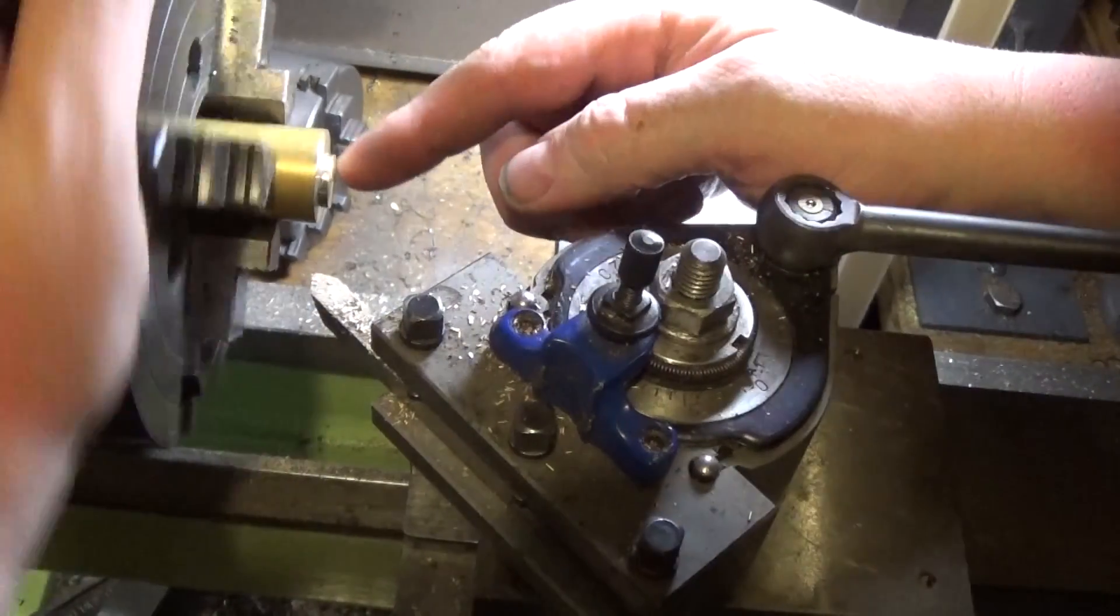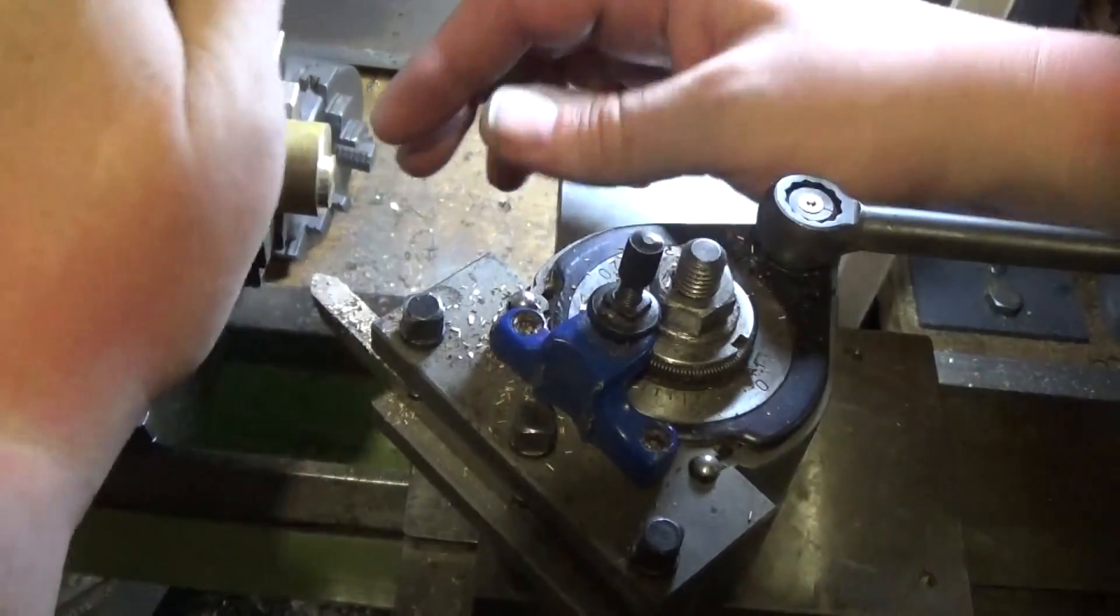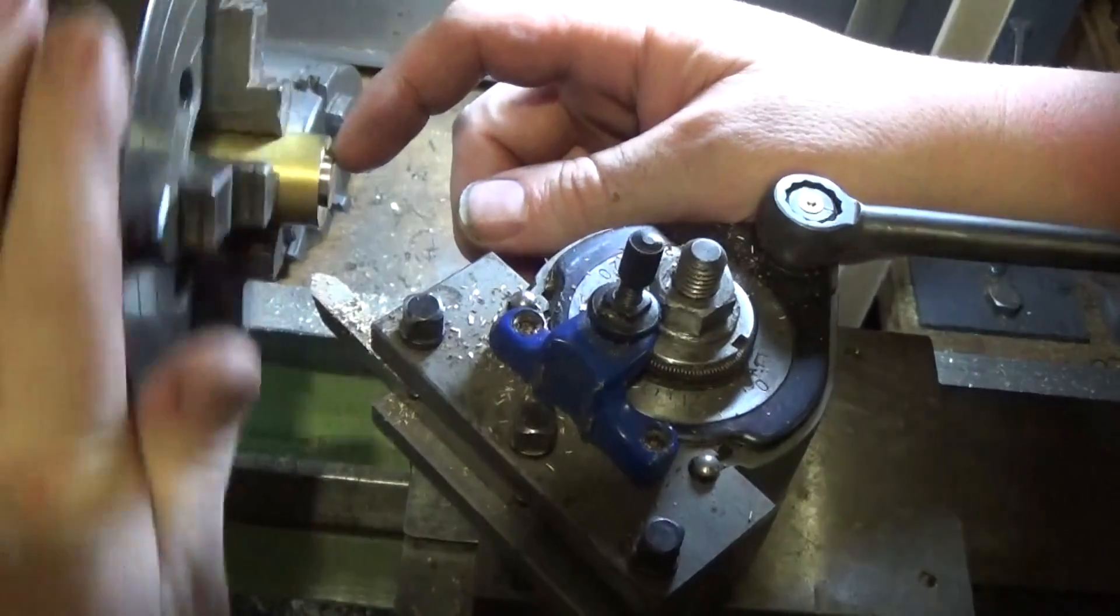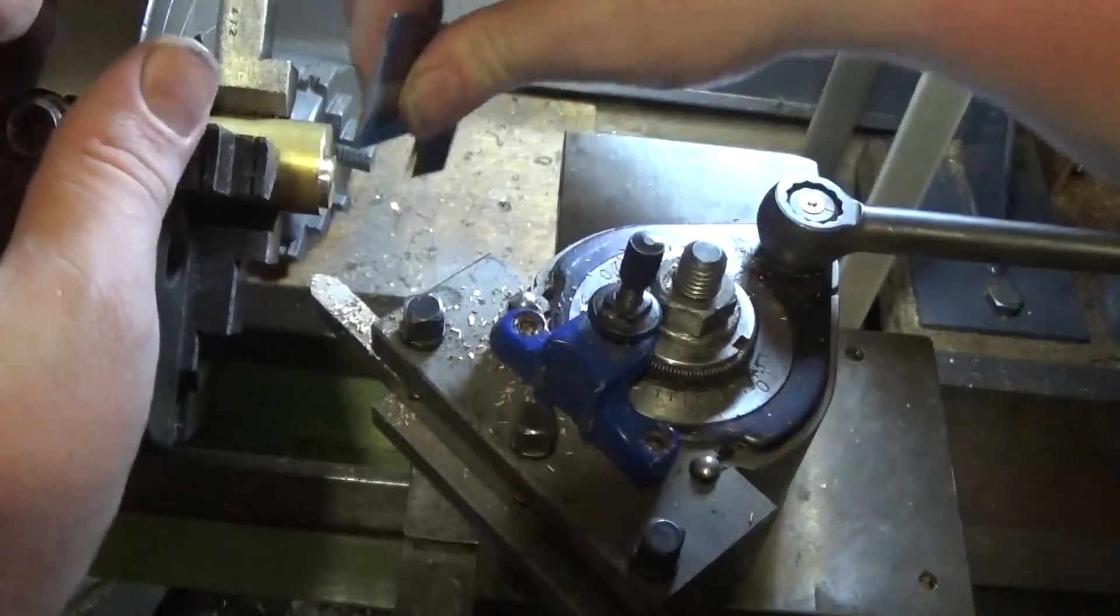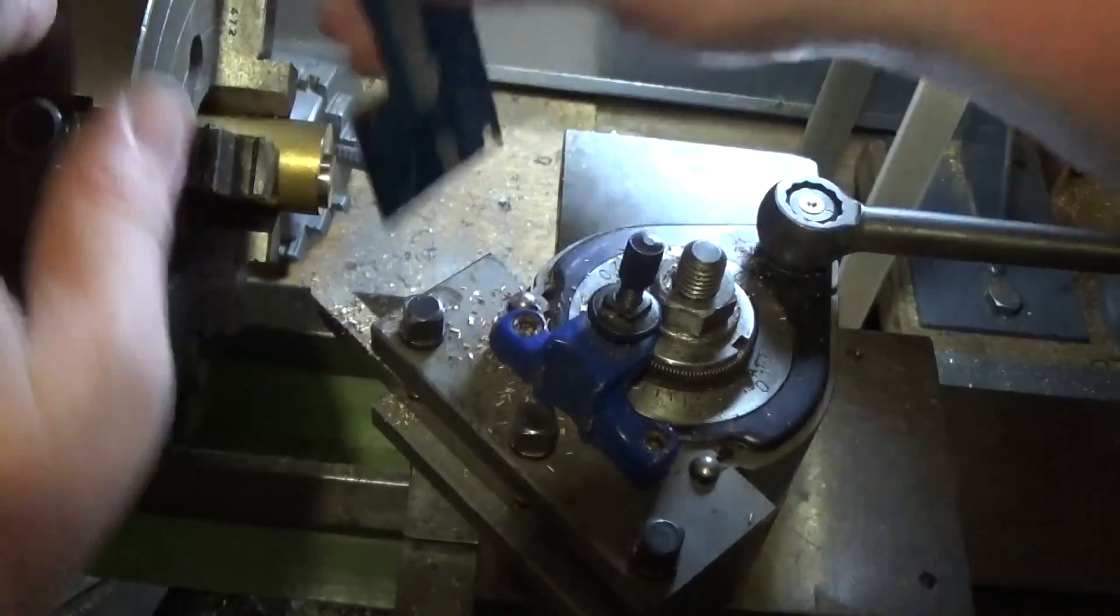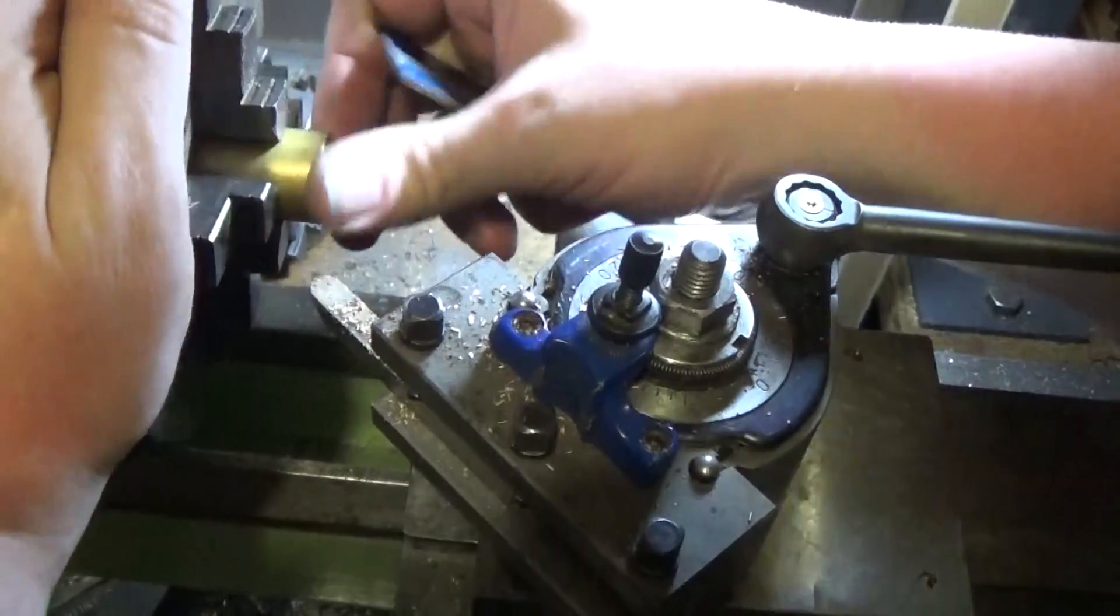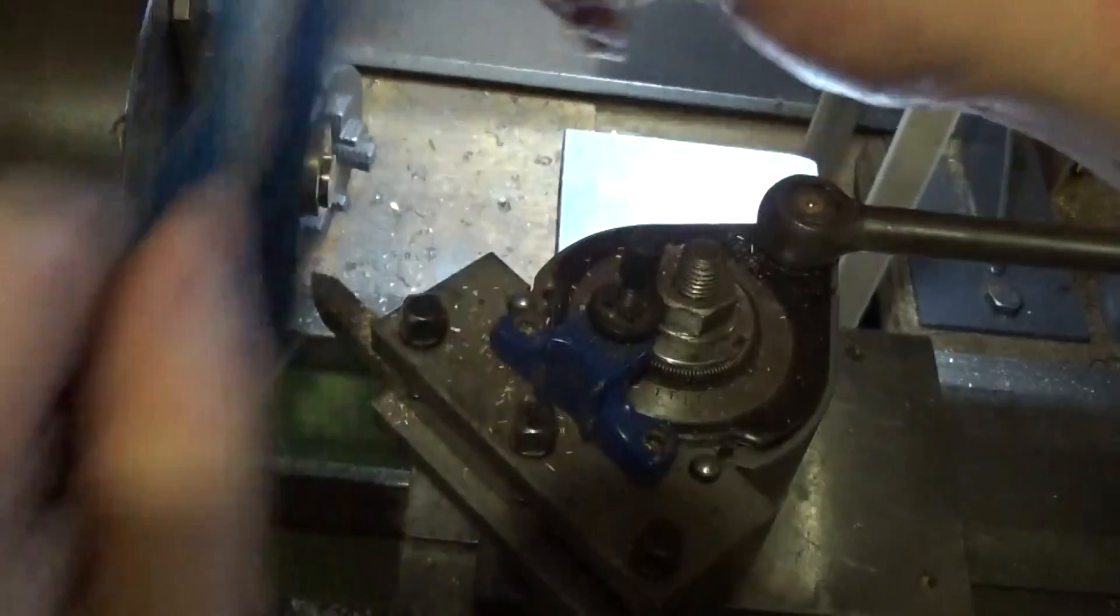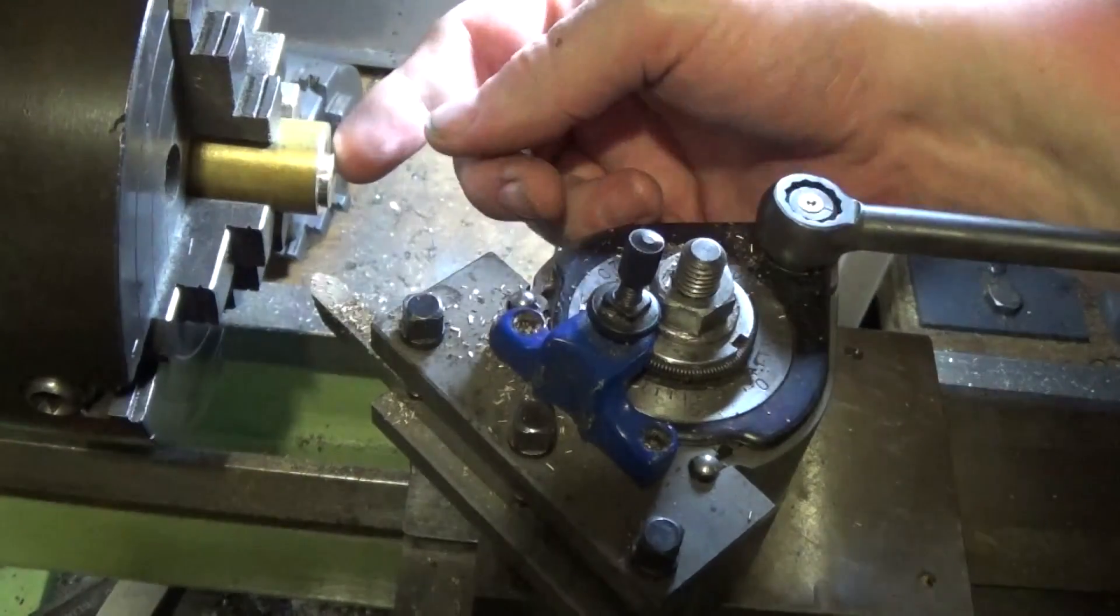So there we have it. We've got a 2-millimeter or 90 thou, fraction over 2-millimeter step there for the piece of 2-mil tin, which is what that's going to be made out of. It's just sitting a fraction proud there, and we've got a 580-thou eccentric there, 140 thou off center.